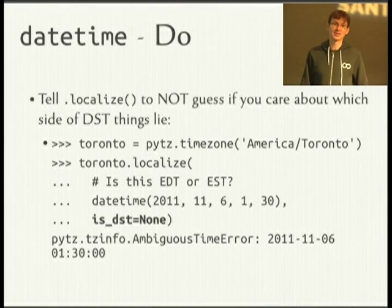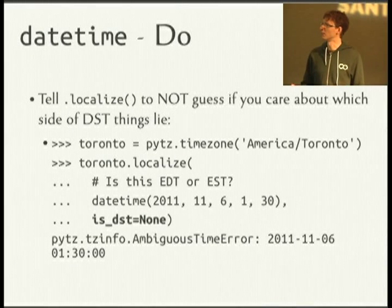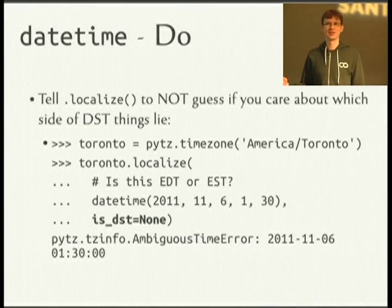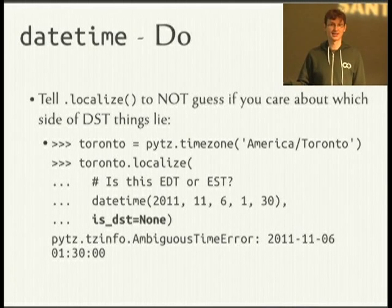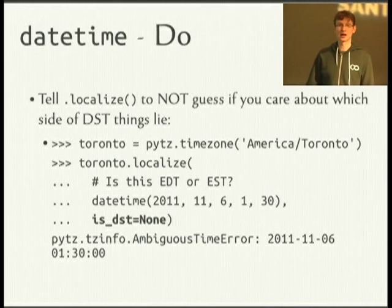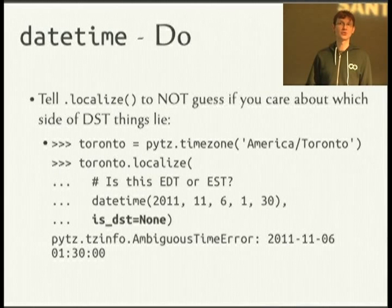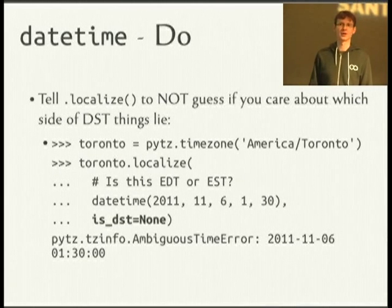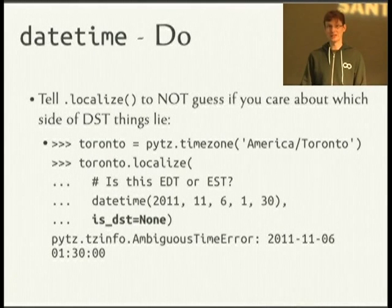Do tell localize to not guess if you care about the 1:30 a.m. ambiguity problem. If you don't pass anything to isDST, it will just guess standard time. But if you pass None, that says don't guess — throw an exception: AmbiguousTimeError. There's also the non-existent 2:30 a.m. that happens on the other side of the year, and it will raise an exception for that as well. That's a perfect opportunity to ask your user which one they meant.